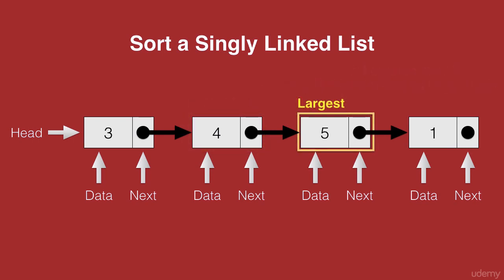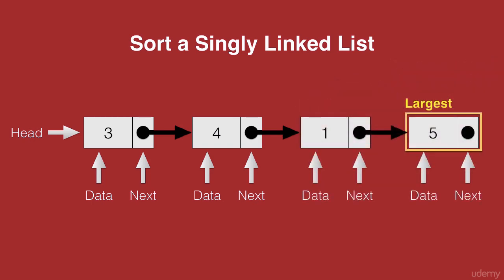Next, we check largest with the next of largest, which is the node with data 1. On checking 5 with 1, we see that 5 is greater than 1 and we swap their positions. So now 1 goes in place of 5 and 5 goes in place of 1. On checking the next of 5, we see that it points to none, which means that's the end of the list and the end of our first iteration. We have now marked 5 as the last node.